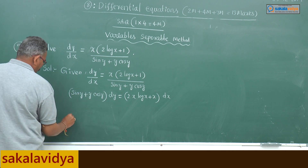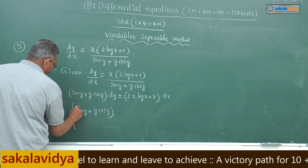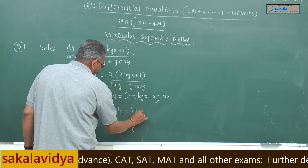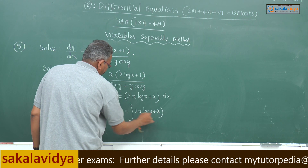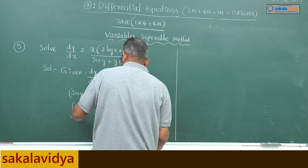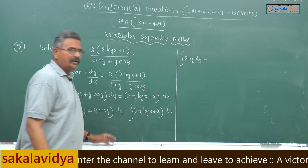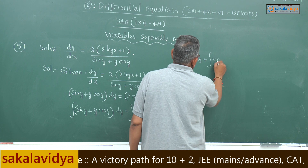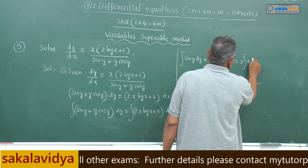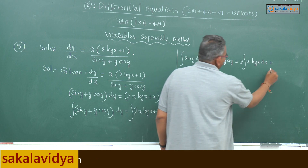Now, integrating on both sides: integral of (sin y plus y cos y) dy equals integral of (2x log x plus x) dx. This gives integral sin y dy plus integral y cos y dy equals integral of (2x log x plus x) dx.